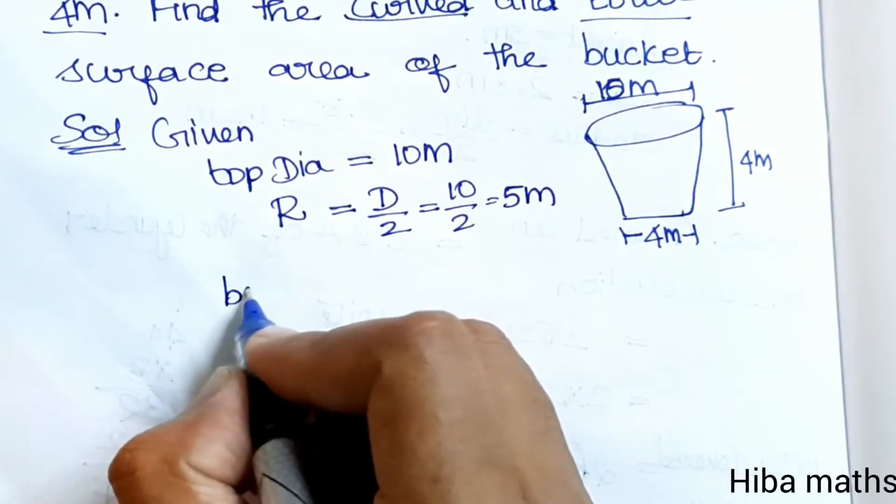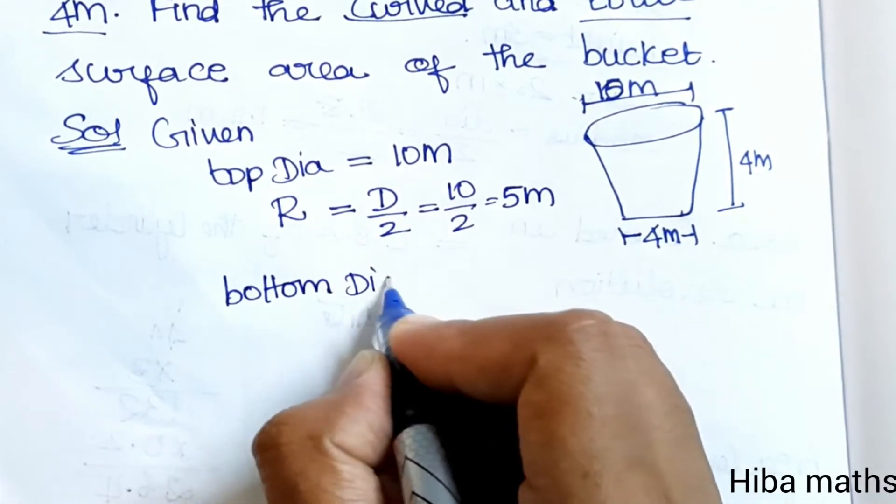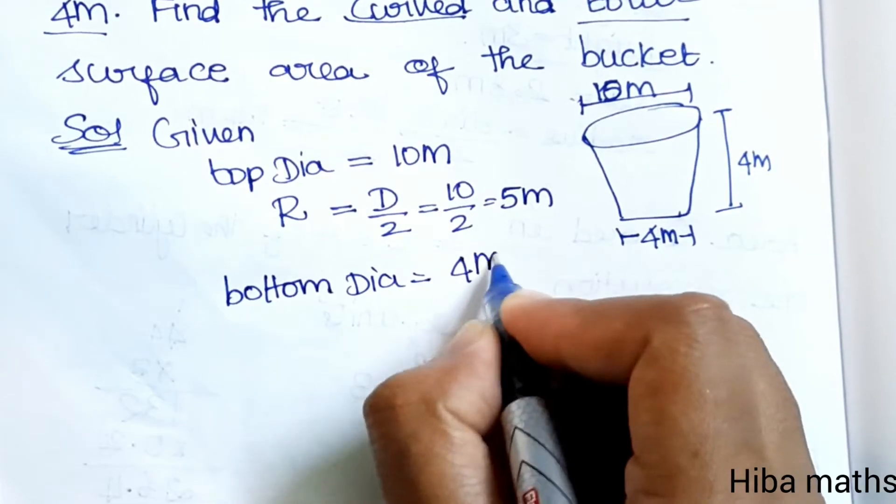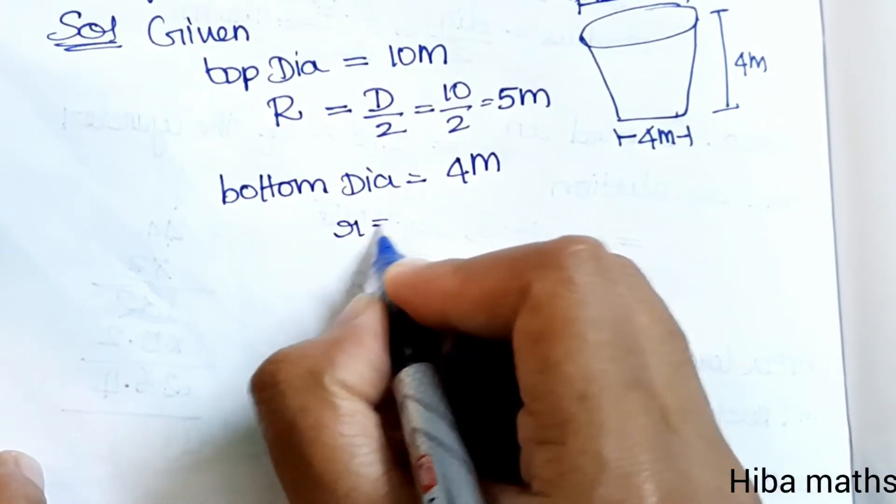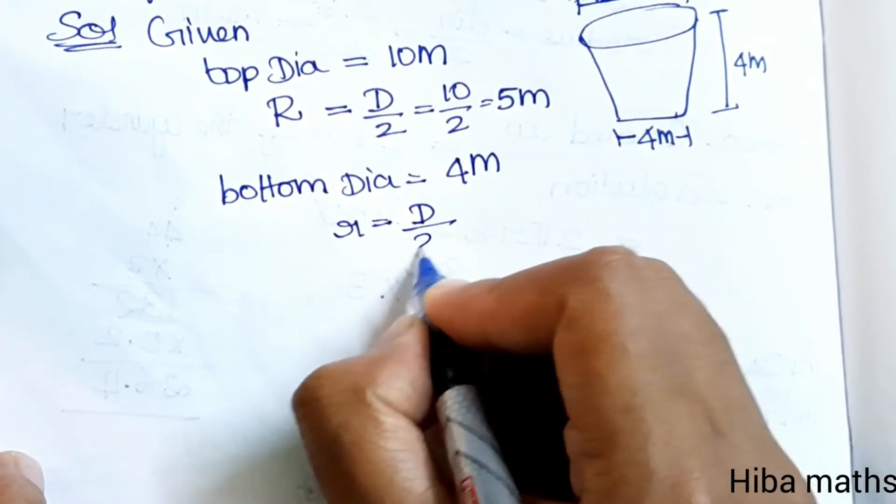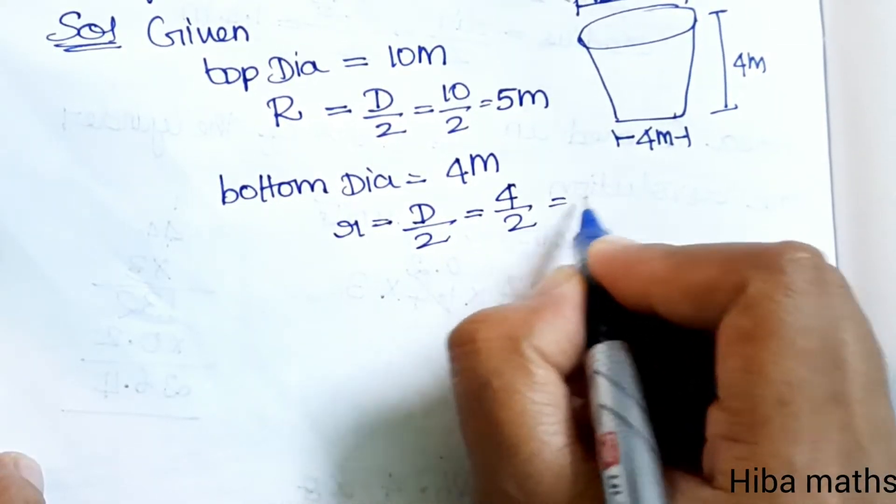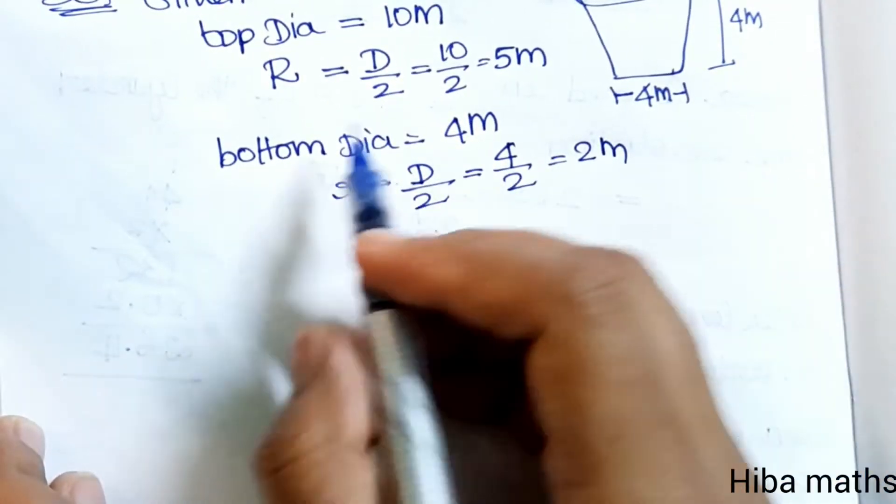Bottom diameter is 4 meter. Small r, the bottom radius, is d by 2, so 4 by 2 equals 2 meters.